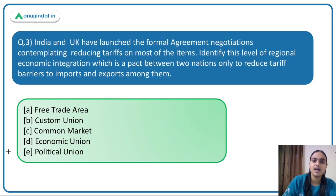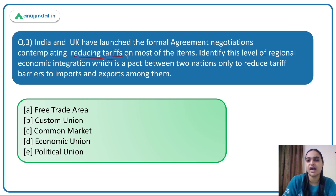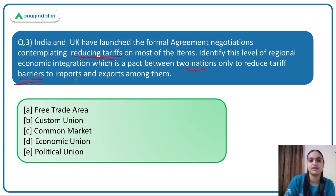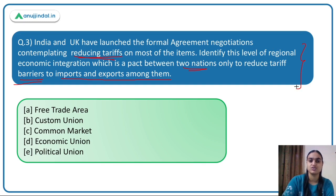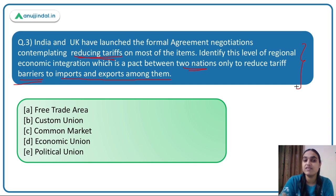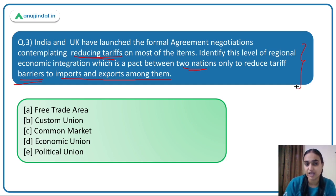The next question states that India and UK have launched formal agreement negotiations to reduce tariffs on most items, and asks us to identify this level of regional economic integration — a pact between two nations to reduce tariff barriers on imports and exports.